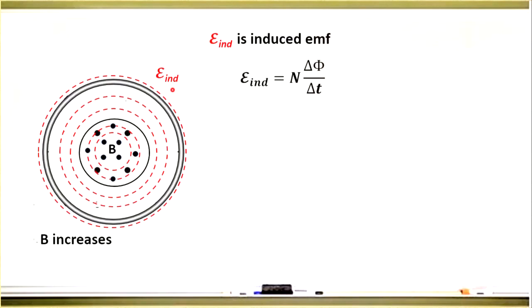This EMF creates the current in the coil, and the direction of this current can be found using Lenz's law, which states that induced current has a direction such that the induced magnetic field, due to this current, points in the opposite direction to the change of the flux.